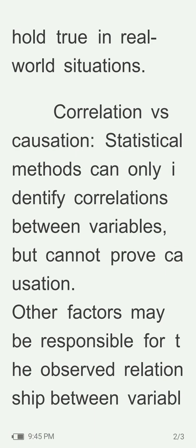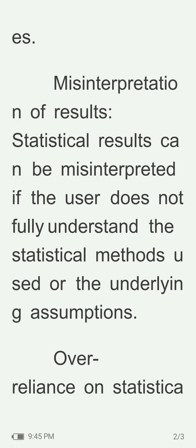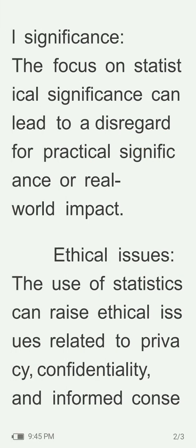Correlation versus causation — statistical methods can only identify correlations between variables but cannot prove causation; other factors may be responsible for the observed relationship between variables. Misinterpretation of results — statistical results can be misinterpreted if the user does not fully understand the statistical methods used or the underlying assumptions. Over-reliance on statistical significance — the focus on statistical significance can lead to a disregard for practical significance or real-world impact.